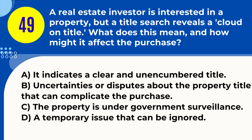Question 49. A real estate investor is interested in a property, but a title search reveals a cloud on title. What does this mean and how might it affect the purchase? A. It indicates a clear and unencumbered title. B. Uncertainties or disputes about the property title that can complicate the purchase. C. The property is under government surveillance. D. A temporary issue that can be ignored. Answer: B. Uncertainties or disputes about the property title that can complicate the purchase. Explanation: A cloud on title refers to any dispute or irregularity in the property's title, creating potential legal issues for the buyer and complicating the purchase process.